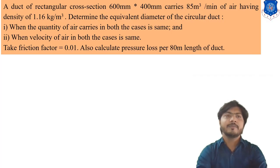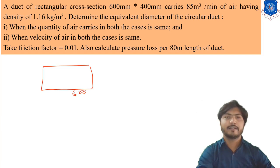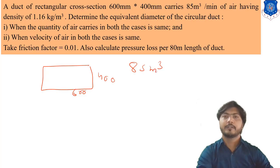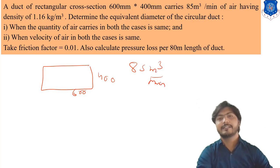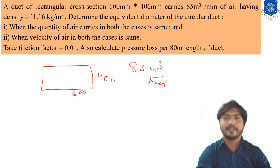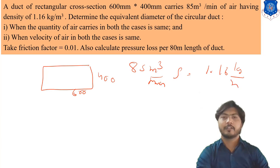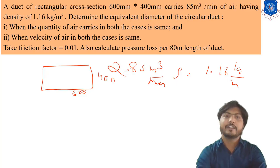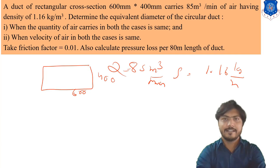Next problem: A duct of rectangular cross-section 600 mm × 400 mm carries 85 cubic meters per minute of air having a density ρ = 1.16 kg/m³. Determine the equivalent diameter of a circular duct when the air flow rate is the same in both cases, and when the velocity is the same. Also calculate the pressure loss per 80 m length of duct. Take friction factor f = 0.01.